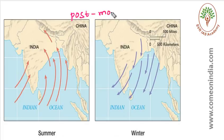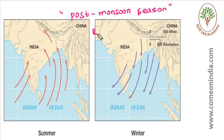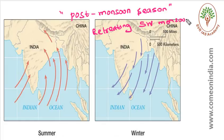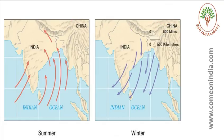The October to December period is also called the post monsoon season or the Retreating Southwest monsoon season. An important point to remember is that Northeast monsoon brings most of the rainfall to Peninsular India, especially the Southern Peninsula.